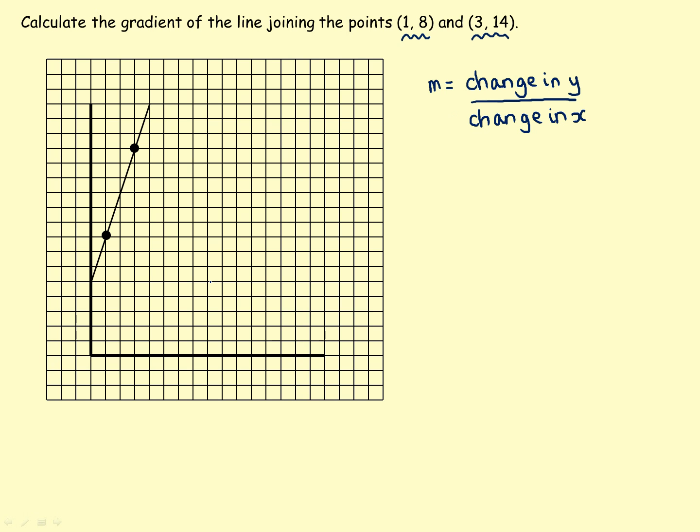So we draw a little triangle on our graph to look at how y is changing and how x is changing. So to start with, I'm going to have a look at how y is changing. So at this point here, y is 8. By the time we get to this point here, y has gone from 8 all the way up to 14.